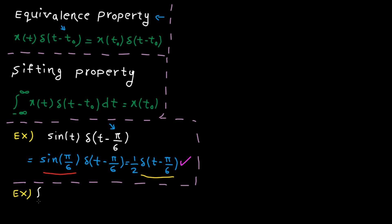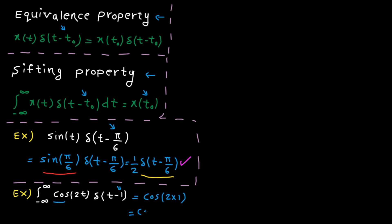Second example: the integral from minus infinity to plus infinity of cosine(2t) multiplied by delta(t minus 1). I'm going to use the sifting property. t0 in this case is 1 and the cosine function is our x of t. The final answer is x at t0, so we get cosine(2 × 1). Done.